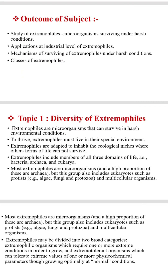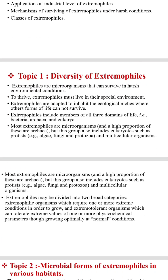Extremophiles are microorganisms that can survive in harsh environmental conditions. An extremophile is an organism able to live in extreme environments such as extreme temperature, radiation, salinity, or pH level. Examples include tardigrades, bacteria, archaea, and eukaryotes. Extremophiles include members of all three domains of life: bacteria, archaea, and eukaryotes. Most extremophiles are microorganisms and a high proportion are archaea, but this group also includes eukaryotes such as protists — algae, fungi, and protozoa — and multicellular organisms.